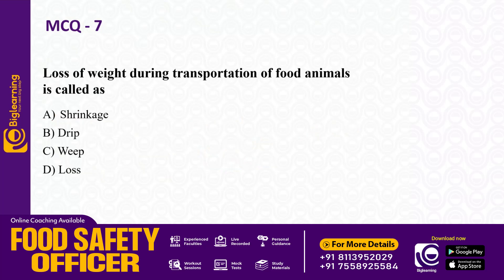Next question: loss of weight during transportation of food animals is called — shrinkage, drip, or weep loss. The answer is shrinkage.